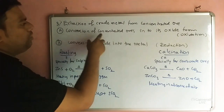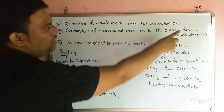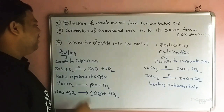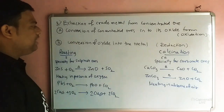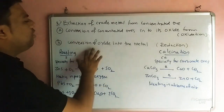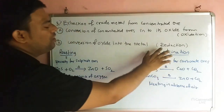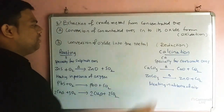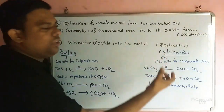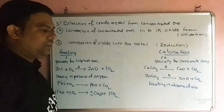The steps are: (A) conversion of concentrated ore into its oxide form — that is oxidation — and (B) conversion of oxide into the metal — that is reduction. Oxide to metal conversion is called reduction.